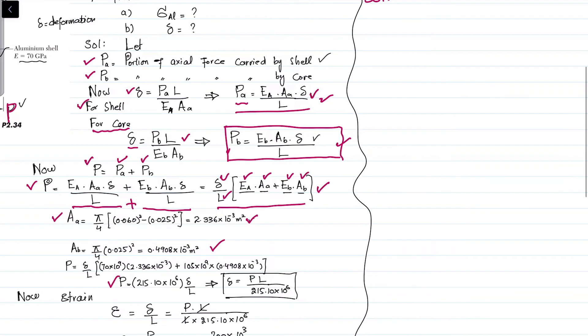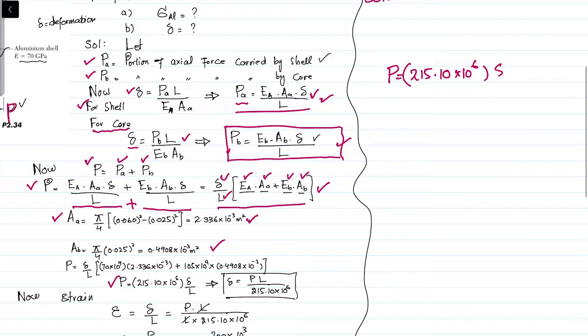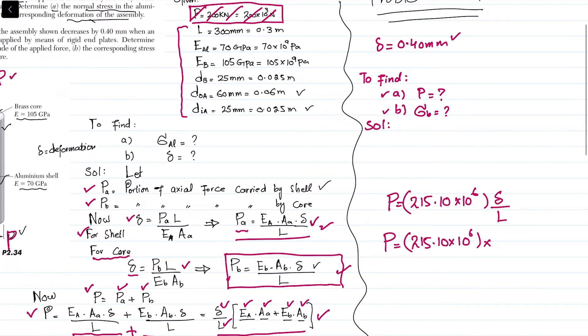At last you will get P equals 215.10 times 10 to the power 6 multiplied by change in length divided by L. Now we can substitute the values: P equals 215.10 times 10^6, change in length is 0.40 millimeters.